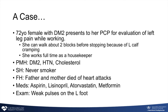She can walk about two blocks before stopping because of left calf cramping, and despite this she's continued to walk, but she finds it now slows her down and she has a hard time performing her work in the same rapid way she's used to. Her past medical history is notable for diabetes for about 10 years, hypertension, and high cholesterol. She's never smoked, and has a family history notable for a father and mother both of whom died of heart attacks in their 60s.